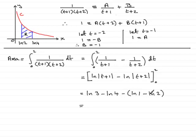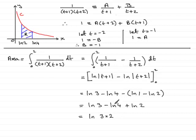Removing the bracket gives ln 3 − ln 4 + ln 2. Using the addition rule for logs, ln 3 + ln 2 = ln(3×2) = ln 6, and subtracting ln 4 is the same as dividing by 4. This simplifies to ln(6/4) = ln(3/2). So the exact area R is ln(3/2) square units.